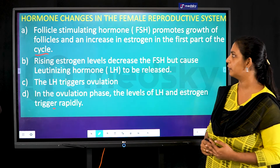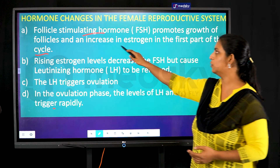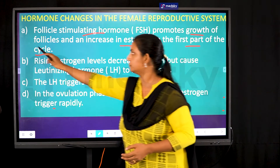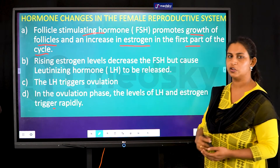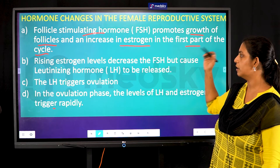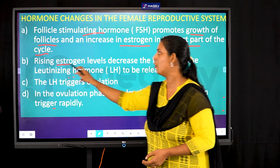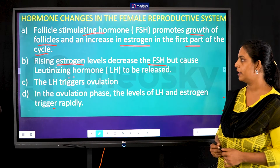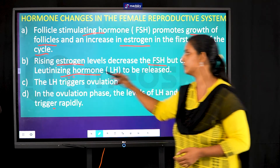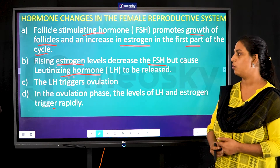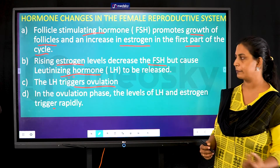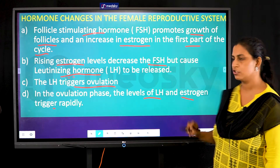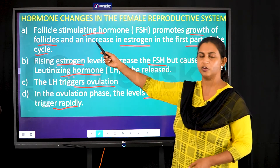FSH increases estrogen in the first part of the cycle and is important for the growth of follicles. When follicles have formed, estrogen levels rise. This rise in estrogen causes a decrease in FSH and an increase in the luteinizing hormone (LH). It is the LH that causes ovulation — the formation of the ovum.